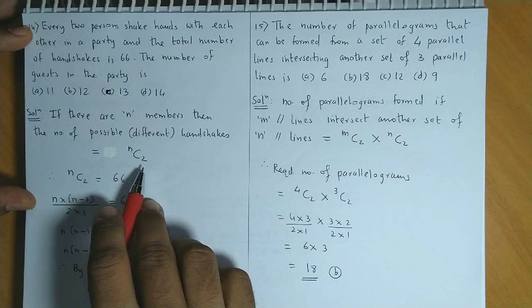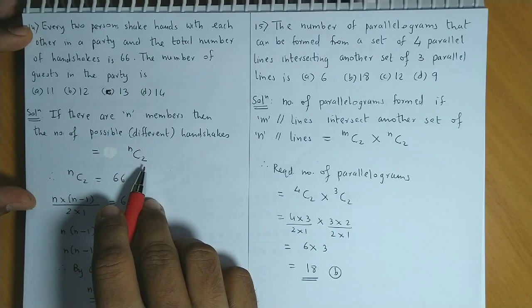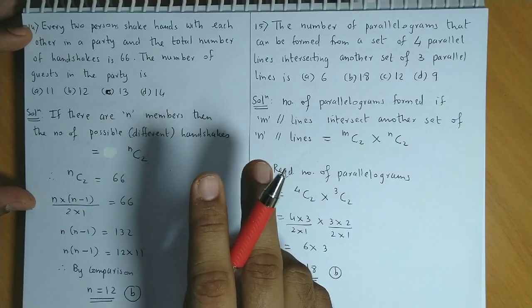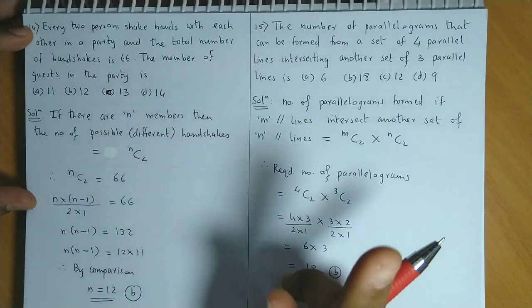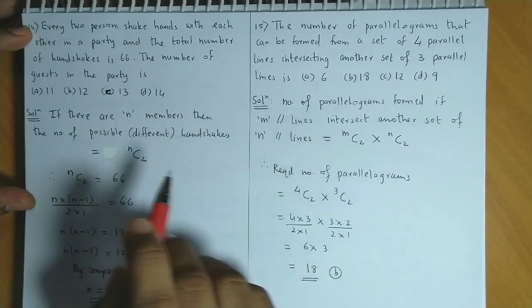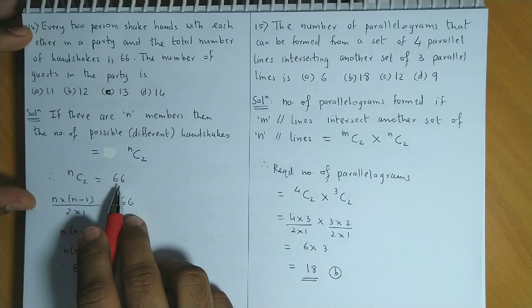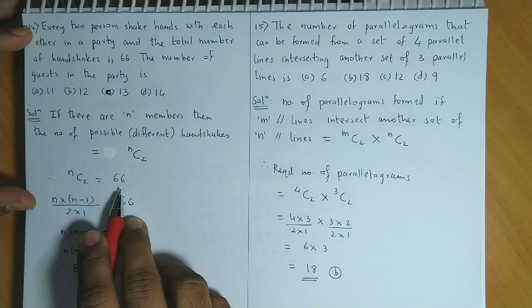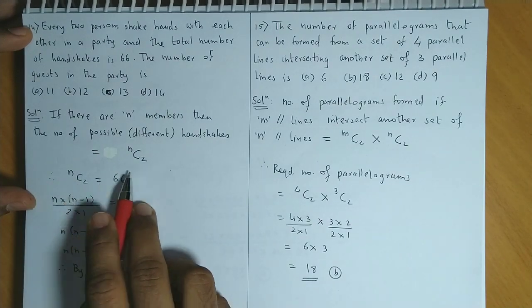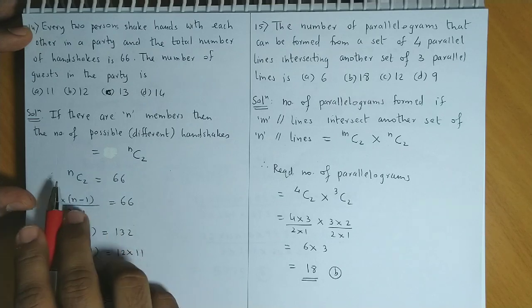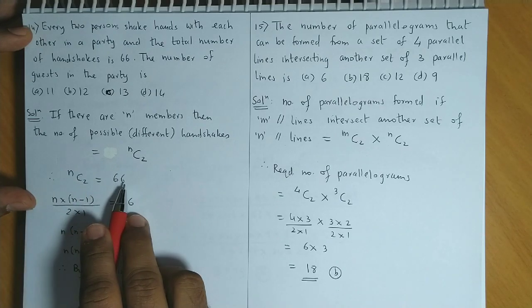Each selection results in one handshake. So if I select two persons, it results in one handshake. So if there are nC2 selections, it has resulted in 66 handshakes. Therefore, nC2 is equal to 66.